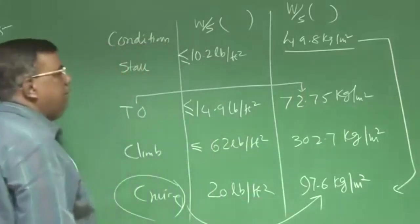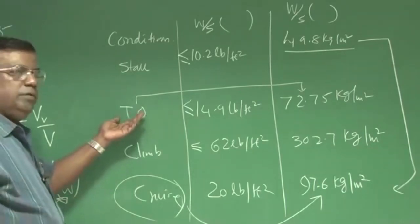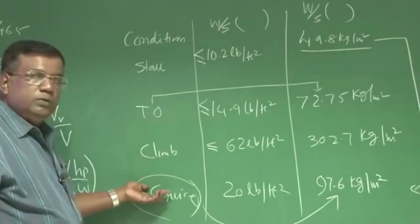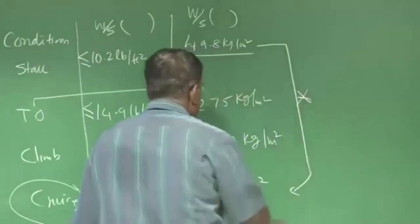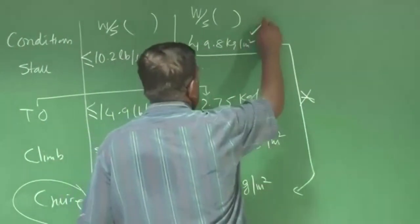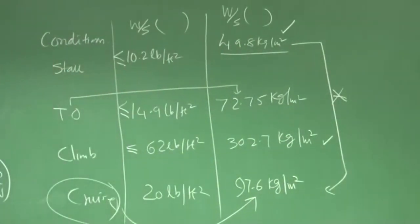So immediately you know, I will be able to satisfy takeoff conditions if I take a cruise condition. So this does not bother you much. What bothers you is this one, and to some extent this one. That sort of an iteration is a must, and we have to do that.